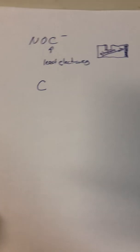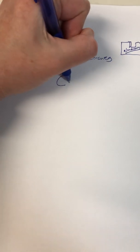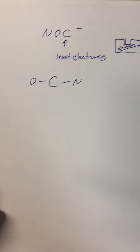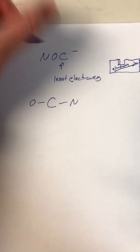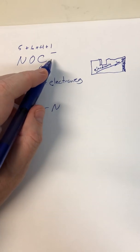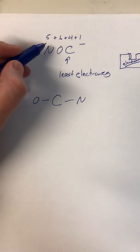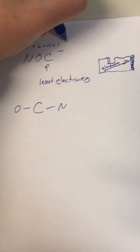So in this case, we have carbon, nitrogen, and oxygen. Carbon is going to be in the center, which means we have nitrogen and oxygen on either side. It's always good to count electrons first: we've got 5 plus 6 plus 4 plus 1 extra electron from the negative charge — that's a total of 16 valence electrons.